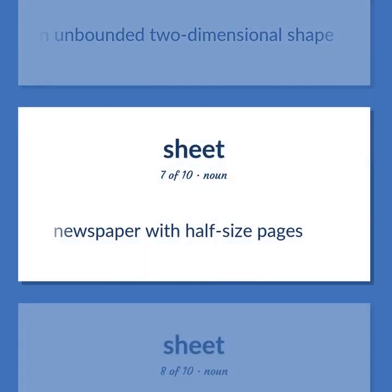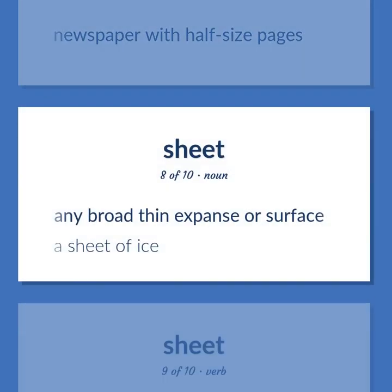Sheet (noun): Newspaper with half-size pages. Any broad thin expanse or surface. Example: A sheet of ice.